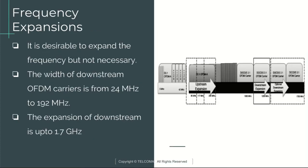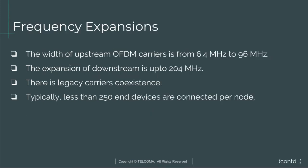It is desirable to expand the frequency but not necessary. The width of downstream OFDM carriers is from 24 MHz to 192 MHz, with downstream expansion up to 1.7 GHz. The width of upstream OFDM carriers is from 6.4 MHz to 96 MHz, with upstream expansion from 204 MHz. There is legacy carrier coexistence, with typically fewer than 250 nodes per device connected per node.